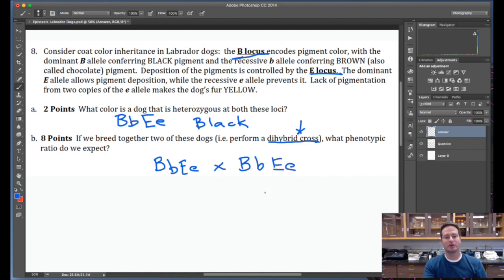Some of you would be tempted to perhaps do a Punnett square. Please don't do that. It's going to take you way too long. You'll run out of time on the exam. Punnett squares are fine for very simple single locus problems. Beyond that, I think you need to get a little bit more sophisticated in your thinking.